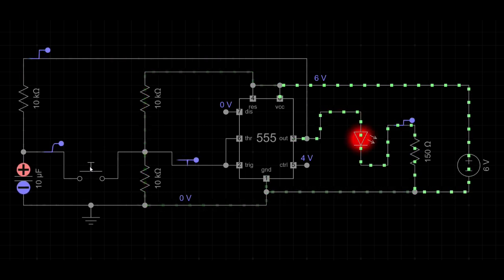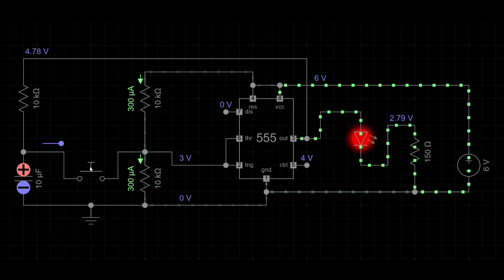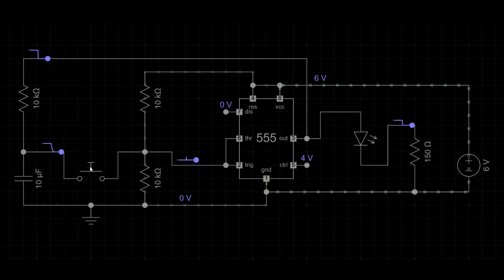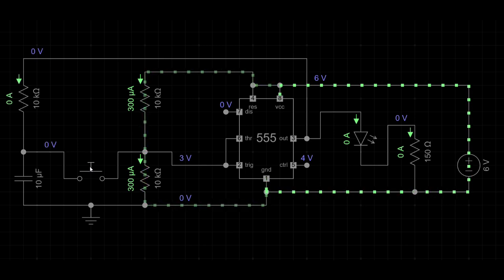When the push button is pressed, the capacitor temporarily lowers the voltage at pin two, triggering the output and turning the LED on. The capacitor charges up while the LED is on, maintaining the state even after the button is released. Pressing the button again discharges the capacitor, sending a high voltage to pin six, which turns the LED off.